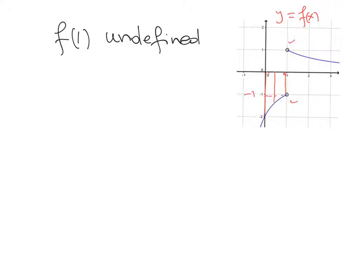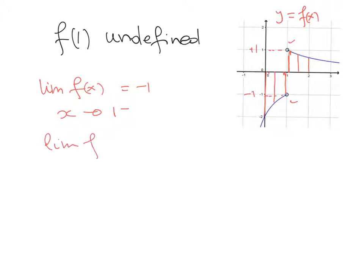Now let's approach x = 1 from the right: x = 2, x = 1.5, and then x very close to 1 — the function approaches +1. In this case, the limit of f(x) as x approaches 1 from the left equals -1, and the limit of f(x) as x approaches 1 from the right equals +1.